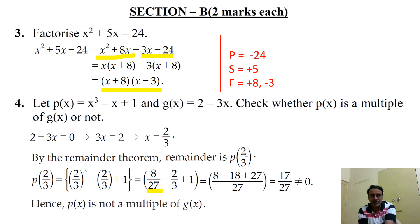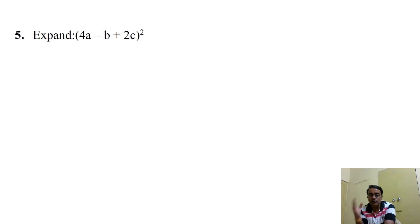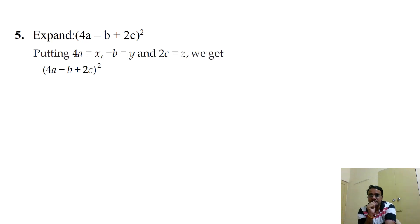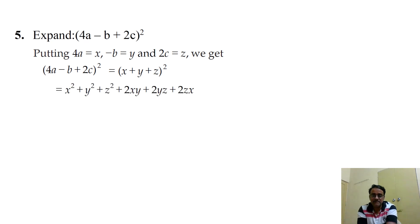Question 5: expand (4a - b + 2c)². We use the formula (x + y + z)² = x² + y² + z² + 2xy + 2yz + 2zx. We let x = 4a, y = -b, and z = 2c, then apply the formula.